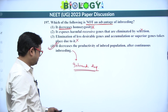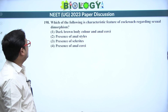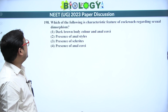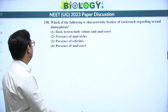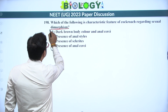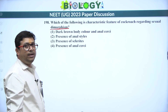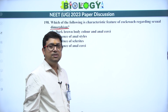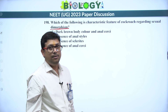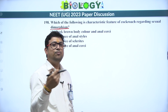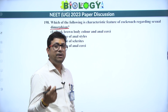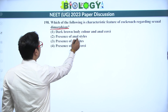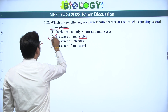Next: characteristic feature of cockroach regarding sexual dimorphism — how do we distinguish male and female cockroach externally? Anal cerci are present in both male and female, but anal styles are present only in males. So the presence of anal styles is the distinguishing feature — answer is 2.